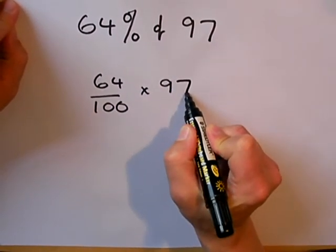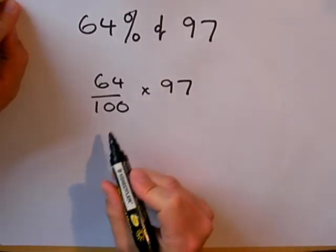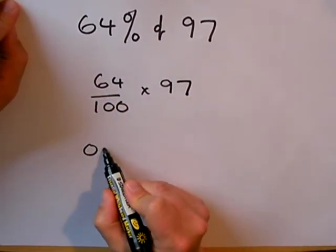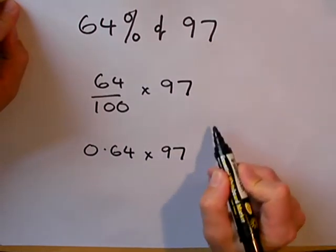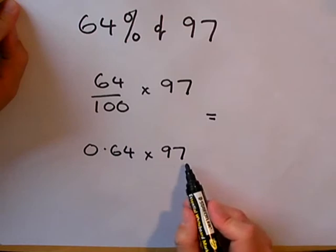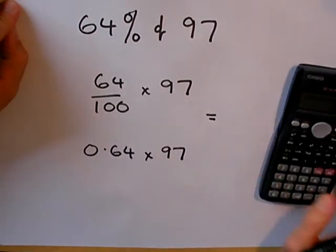Or you can rewrite 64% as a decimal and multiply by 97. Either way, these two sums will work out 64% of 97.